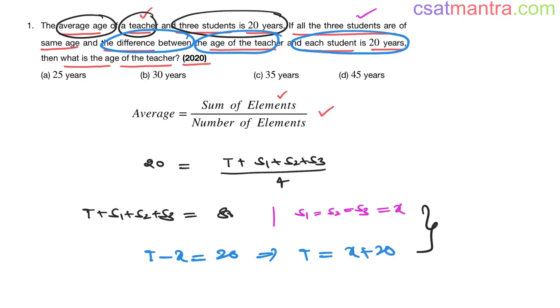Now let's substitute these values in this equation. T is x plus 20. S1 plus S2 plus S3, that is 3x. All are same, so x plus x plus x equals 3x. That equals 80.